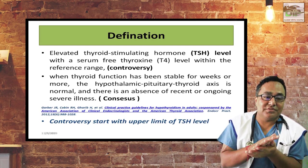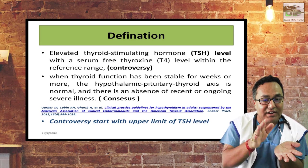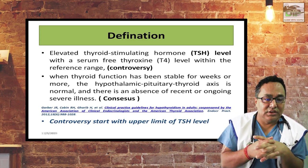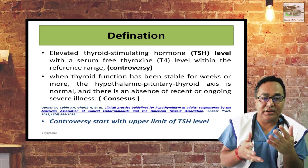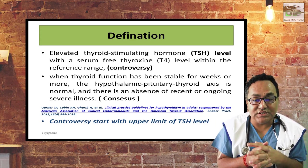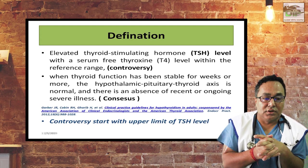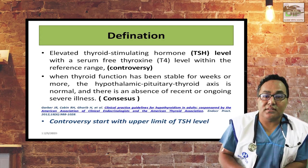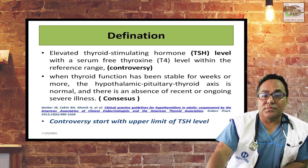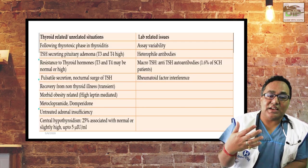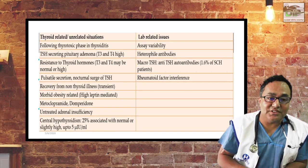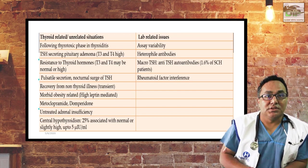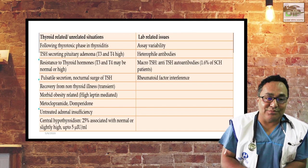The definition of subclinical hypothyroidism is elevated TSH with serum FT4 within the reference range. The consensus states that thyroid function tests should be stable for weeks, the hypothalamic-pituitary-thyroid axis should be normal, and there should be absence of recent or ongoing illness. There is controversy about the upper limit of TSH because TSH can rise in many conditions, so you must repeat the thyroid function test twice before labeling a patient as subclinical hypothyroidism.